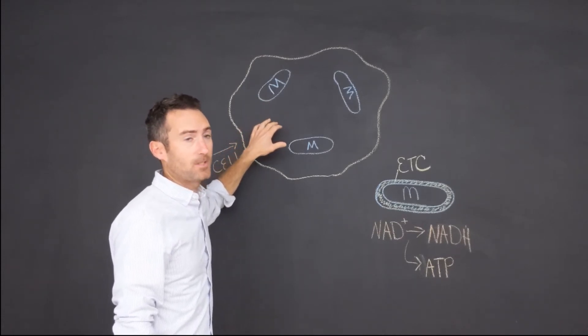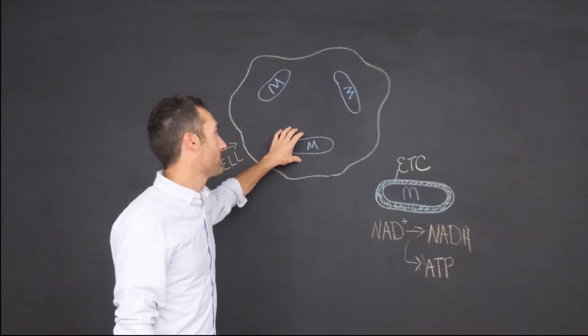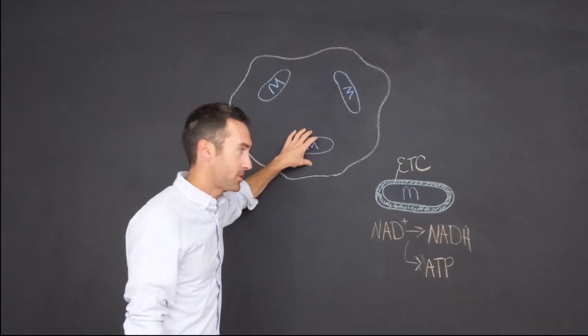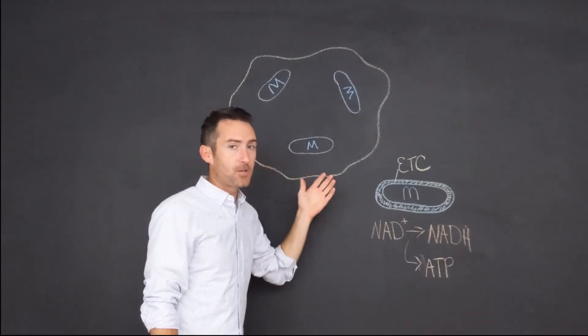There's not just one mitochondria per cell, it's actually a lot. And these guys are really important because they're the ones that are producing energy for the cell so the cell can function. So why does that matter?